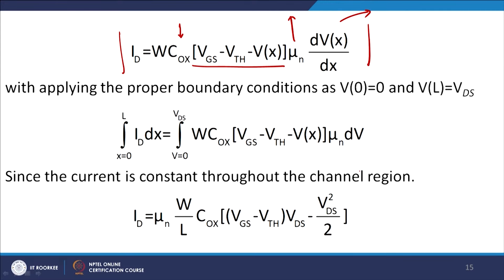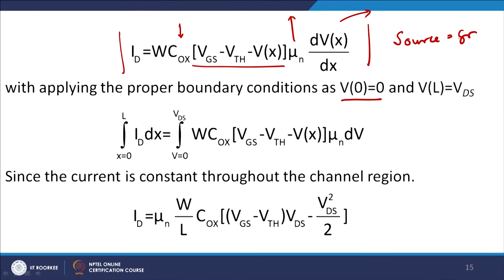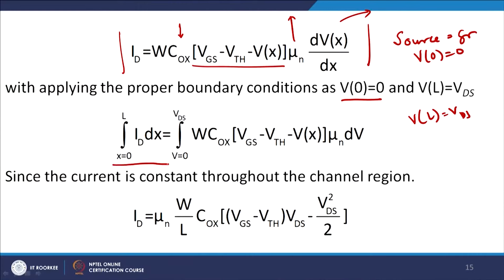This is a differential equation requiring boundary conditions. At x = 0 (source, grounded), V(0) = 0, and at x = L (drain), V(L) = VDS. Integrating both sides — x from 0 to L and V from 0 to VDS — and assuming current continuity (constant ID), we get the expression: ID = μN × (W/L) × Cox × [(VGS − VTH) × VDS − VDS²/2].